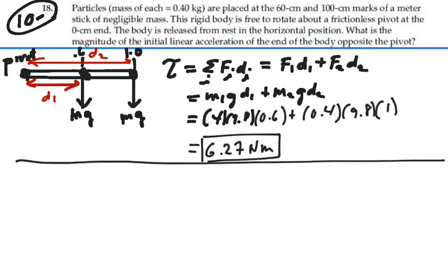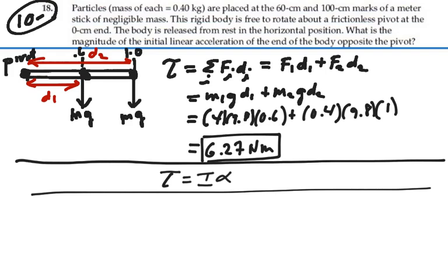We want to relate this to the torque in the form of moment of inertia times angular acceleration. Because we need to find the angular acceleration before we can find the linear acceleration at the end of the rod. Now in order to use this, we need to find the moment of inertia. So let's kind of take a side step here.